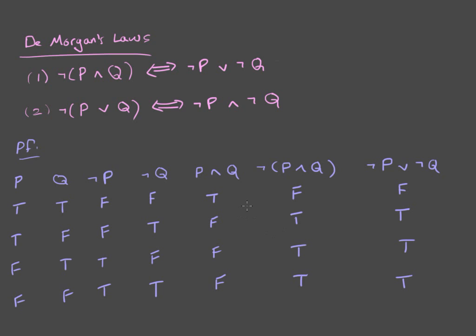And so you see that in every instance, you get that these have all the same truth values. And therefore, they are logically equivalent. So, for any possible combination of truth values of P and Q, these will always agree. And therefore, they are equivalent statements. And that's De Morgan's Law.